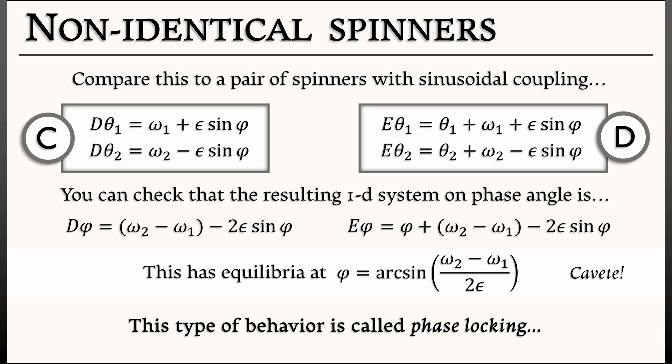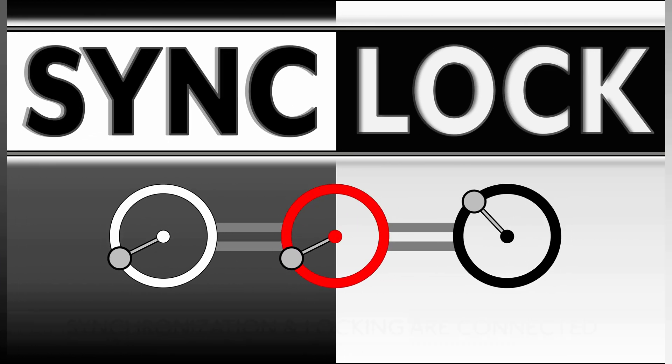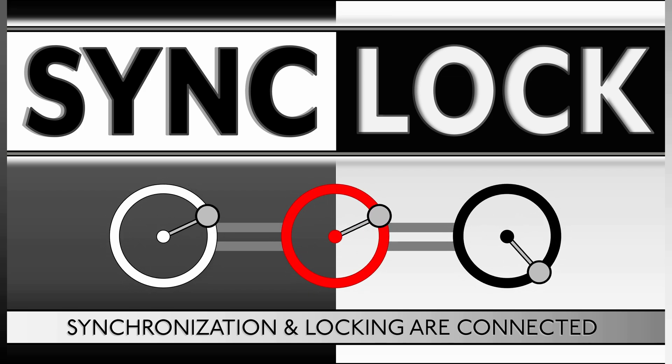When you do have a stable equilibrium, this is called phase locking. It's a very important behavior. Synchronization is different than locking. With sync, everything evolves to a spinner system where they're going through the exact same angle at the same time, same speed. With phase locking, eventually they're moving at the same speed, but there's a constant angular difference between those two spinners.